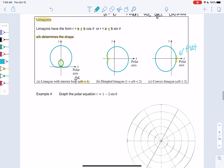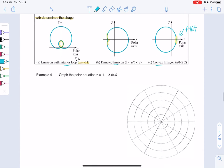So all I really do is identify which one do I have. Do I have a loop, a dimple, or convex? And then all you really need is a couple points. I usually find four is enough, but you can always do more. So let's see, which case do we have in this first one? Example four.